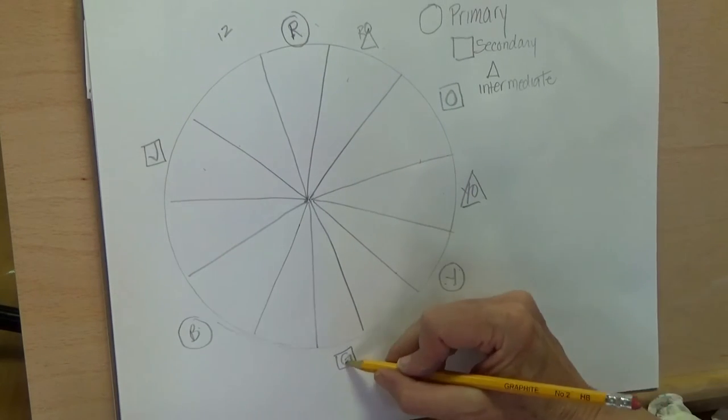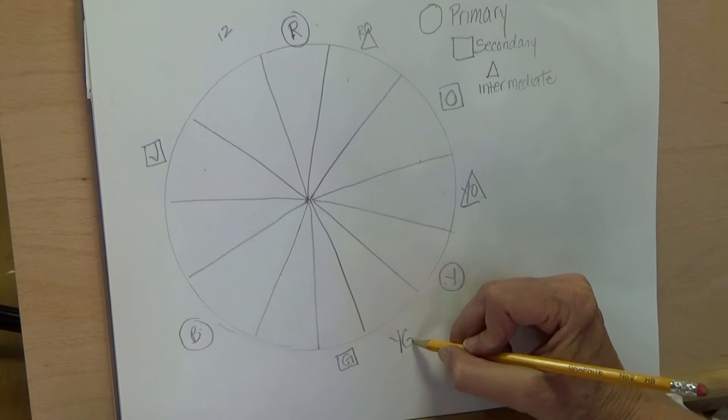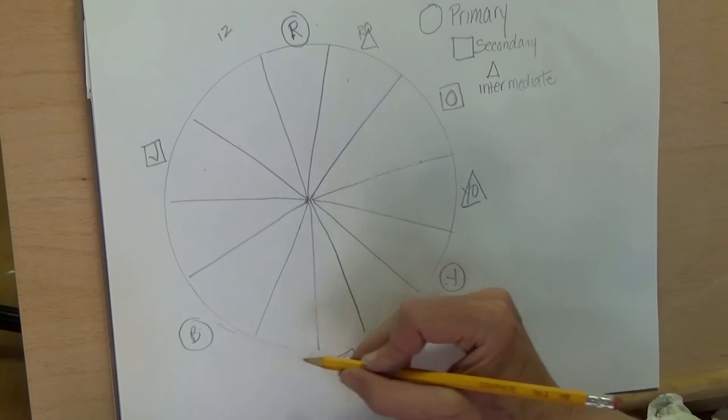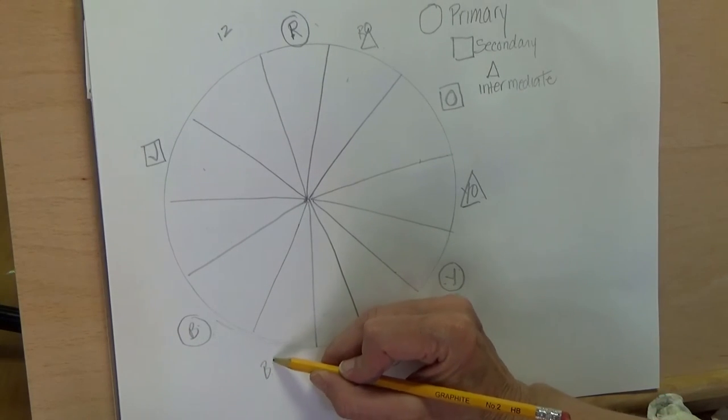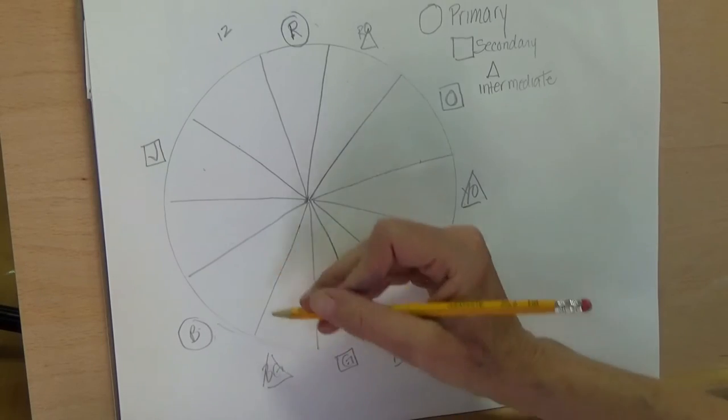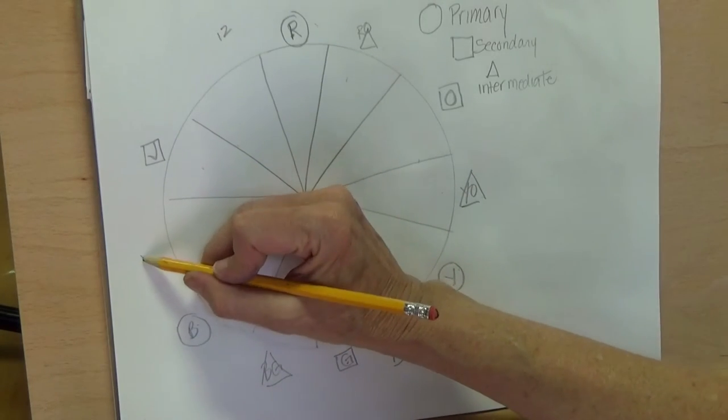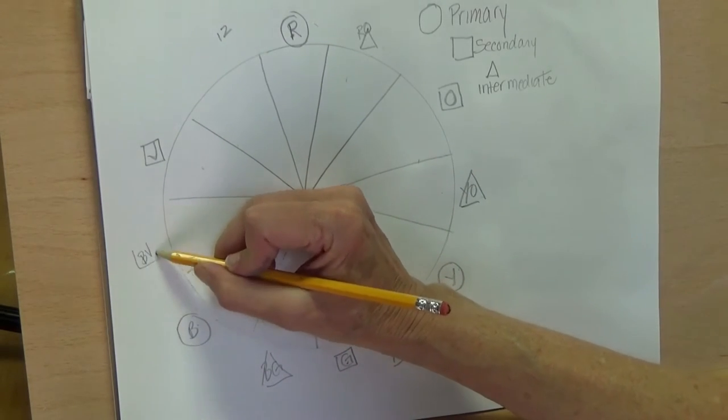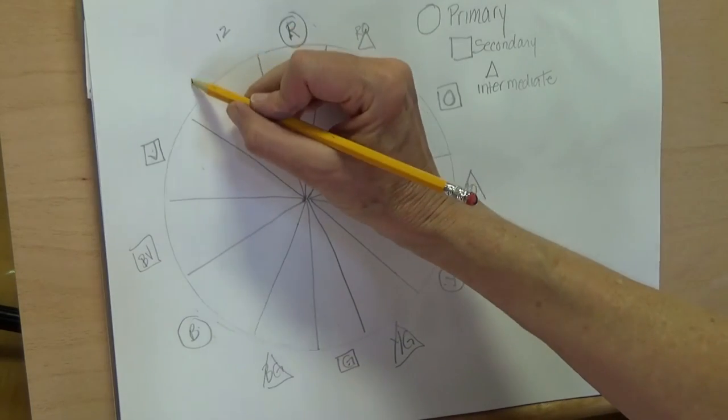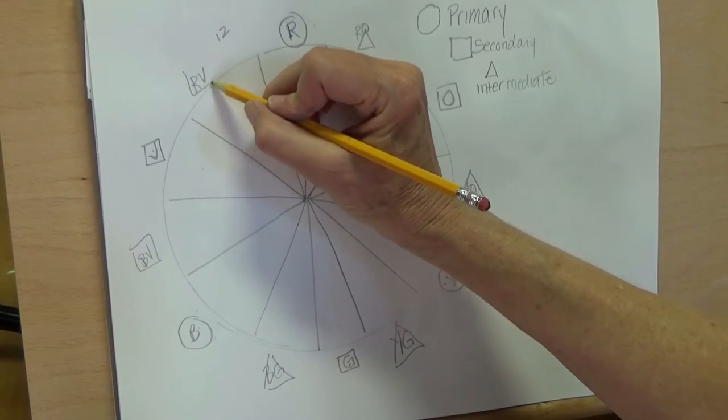Yellow-green, blue-green with a triangle around each one, blue-violet, and red-violet with a triangle. That should be a triangle as well.